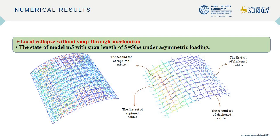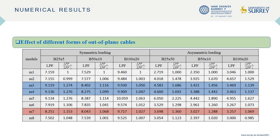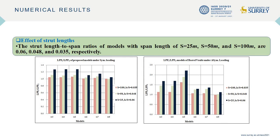The ratio of the load proportional factor of all models to that of model M1 are calculated and tabulated. The load proportional factor ratio for models M3 and M4 shows a slight difference. The load proportional factor of model M7 is, in any case, higher than that of model M6, and model M8 has less load-carrying capacity than other models. Regarding the effect of strut length, the strut length-to-span ratios for span lengths of 25 m, 50 m, and 100 m are 0.06, 0.048, and 0.035, respectively. For all values of strut length-to-span ratio, an increase in collapse load can be observed in all models. In asymmetric loading, the effects of out-of-plane cables in increasing the collapse load are more evident. The collapse loads of models M3 and M4 are similar, but the collapse load of model M7 is higher than that of model M6.